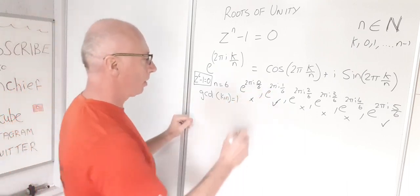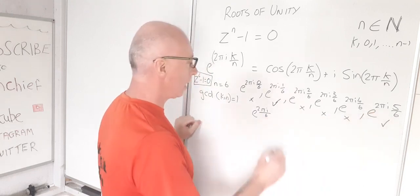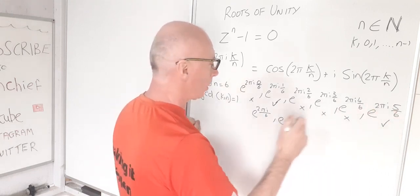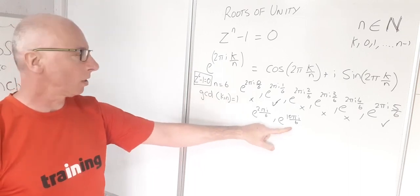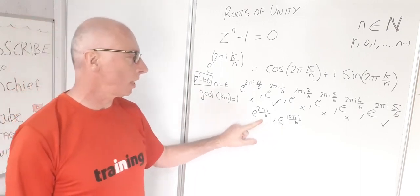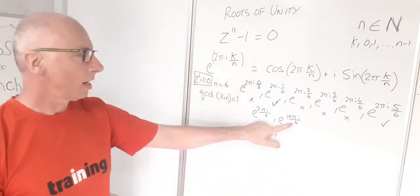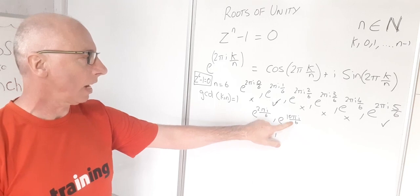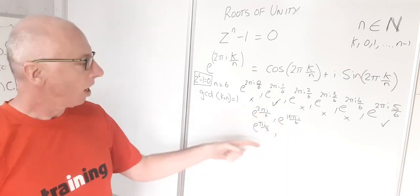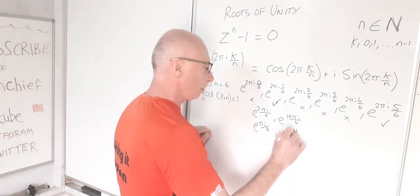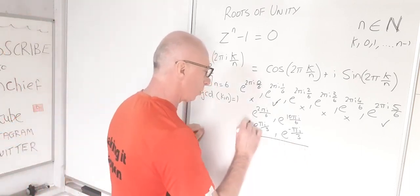Writing these down: we have e^(2πi/6) and e^(2πi·5/6) = e^(10πi/6). Simplifying, the first gives e^(πi/3). For the second, 10πi/6 — subtracting 2π (i.e., 12πi/6) — gives e^(−2πi/6) = e^(−πi/3), which is the complex conjugate of the first. These are our primitive roots for n equals 6.